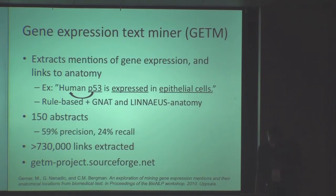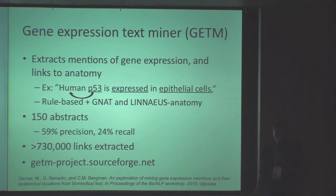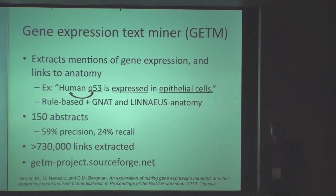The more complex system starts to move towards what I actually want to do — to extract information and knowledge and provide it to people. Now armed with Linnaeus and Gnat, we can extract more complex information. In this case, mentions of gene expression can be linked to mentions of anatomy. So in the example sentence, we have P53, we have human, and with this system we also recognize anatomical locations — we have 'epithelial cells,' which is a cell type, but it can also be organs or cell lines.